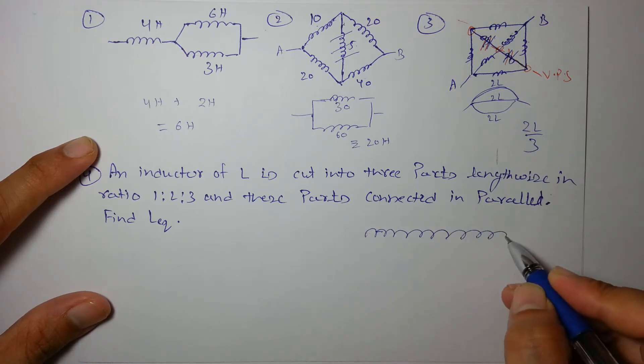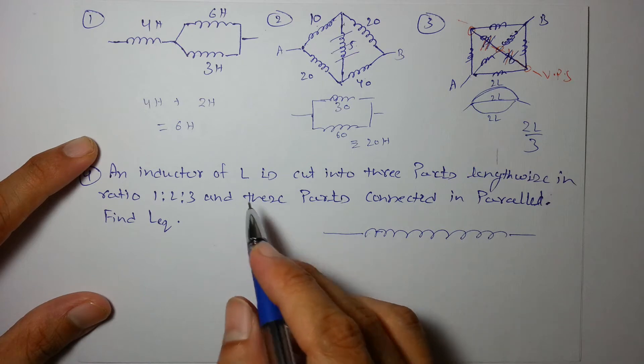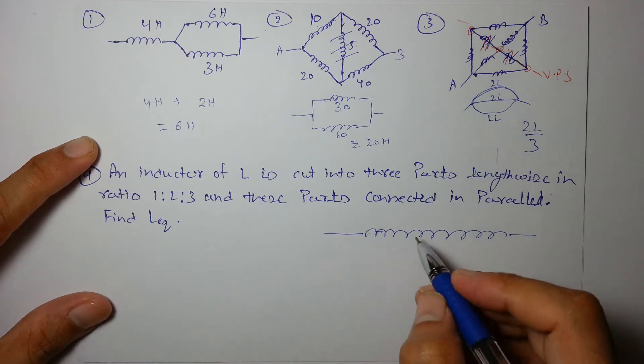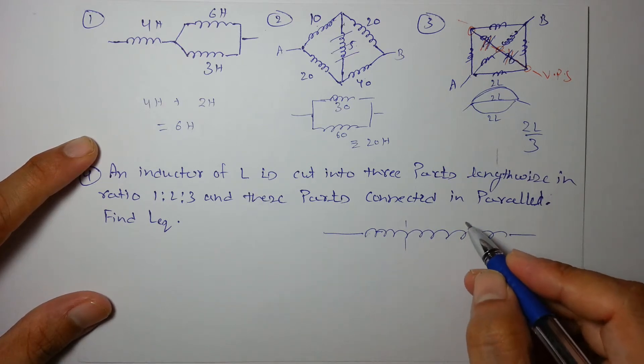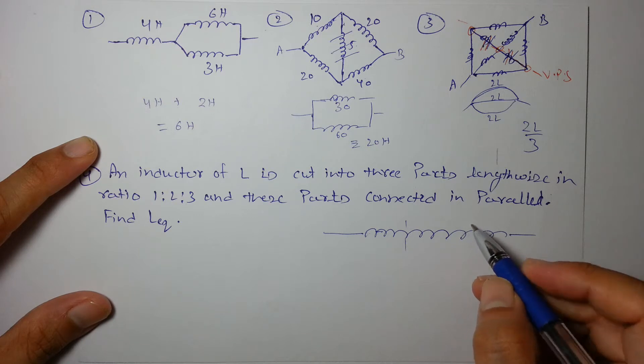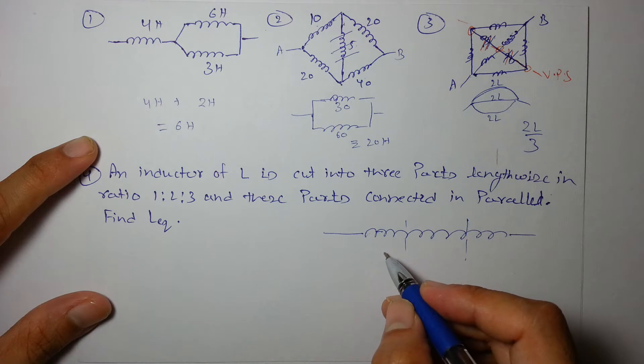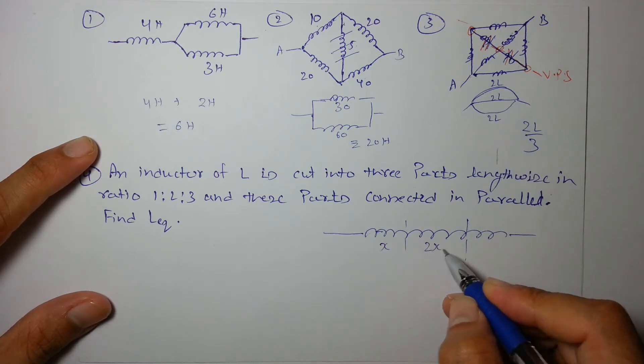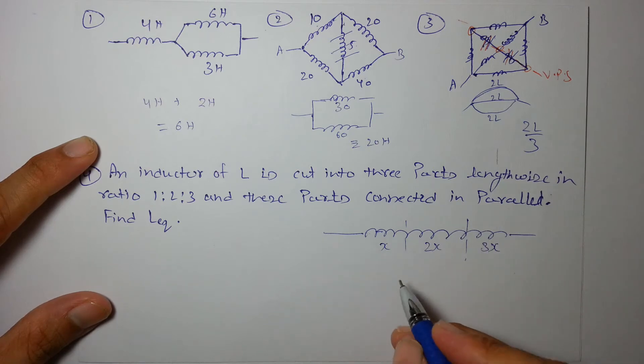So let's say this is the inductor which is cut lengthwise. As we know, length is proportional to the inductance. Let's say these are the portions in which it's cut.